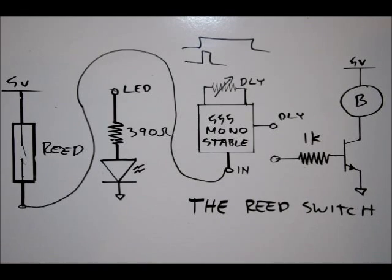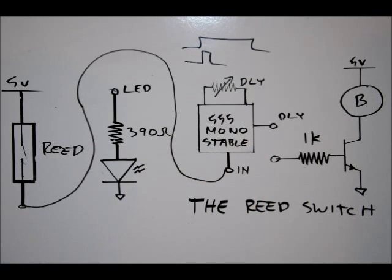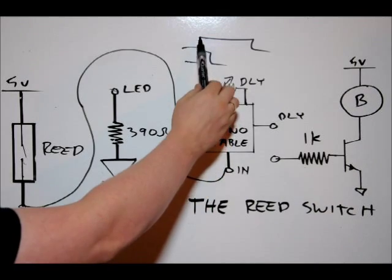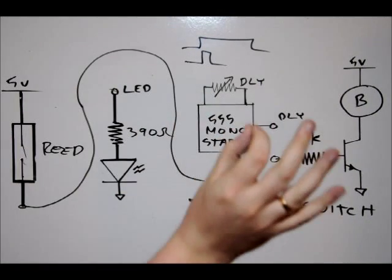So basically in this case, if I have a tune for a high pulse width, I take my magnet, put it close to the reed switch, bring it away, and then the DLY output of the 555 monostable multivibrator will go high, 5 volts, for however long I've tuned it.